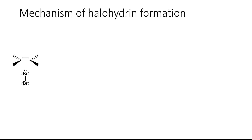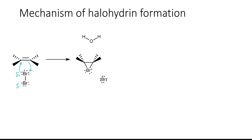The mechanism of halohydrin formation starts identically to the previous reaction: electrons from the alkene bond grab the bromine, and the lone pair from the bromine grabs one of the carbons. Again, the alkene polarizes the bromine molecule so that the bromine closer to the alkene has a partial positive charge and the one further away has a partial negative charge, resulting in the brominium ion. Now there are two options: the negative bromine ion is present, but its concentration is very low compared to the solvent molecules. In this case our solvent is water, so water serves as the nucleophile and the reaction proceeds through an SN2 mechanism, attacking from the back, with the electrons from the bond going over onto the bromine atom.